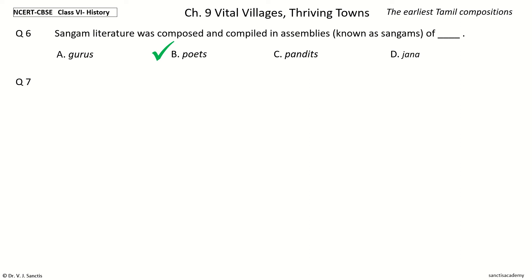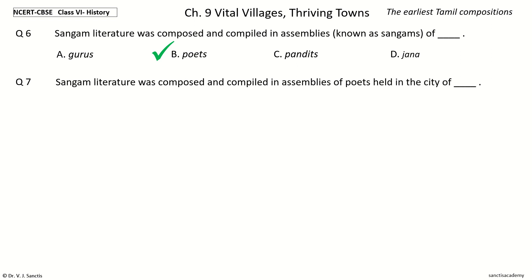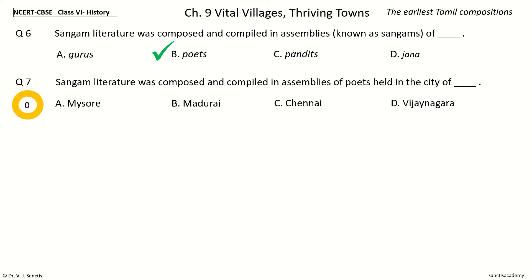Question 7. Sangam literature was composed and compiled in assemblies of poets held in the city of blank. The options are: Mysore, Madurai, Chennai, Vijayanagara. The answer is Madurai. Sangam literature was composed and compiled in assemblies of poets held in the city of Madurai.